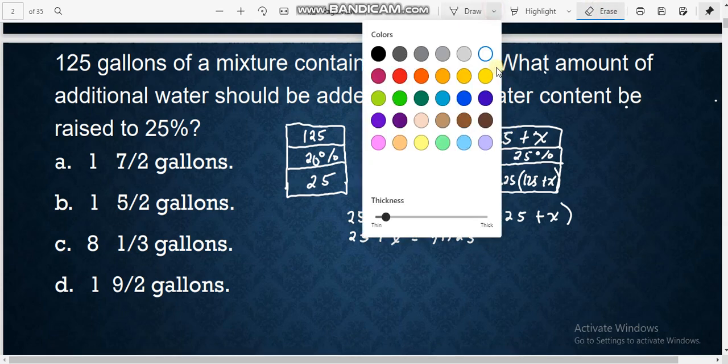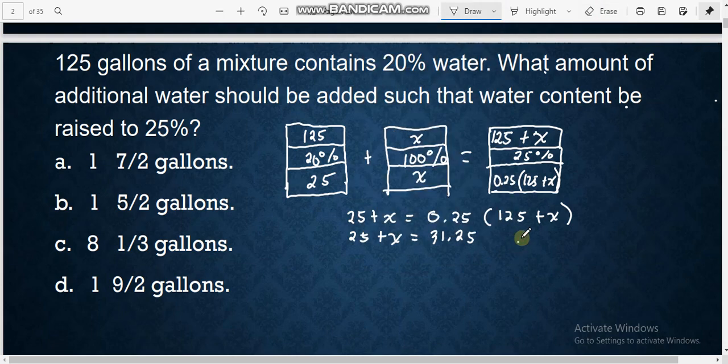And then you multiply this, so this is already addition. So 0.25 times x, that is plus 0.25x. We combine like terms. We transpose, or additive inverse, positive becomes negative. 0.25x equals 31.25 minus 25.